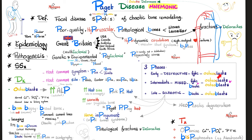There are three phases of Paget's disease. The early phase is destructive — lytic, driven by osteoclasts — with no significant elevation of alkaline phosphatase yet. The intermediate phase is mixed lytic and blastic (osteoclasts and osteoblasts together), and alkaline phosphatase begins to rise.